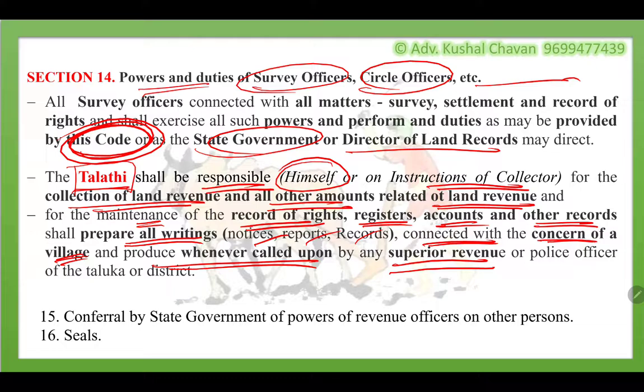Section 15 deals with the conferral by the state government of powers of revenue officers on other persons — whatever functions, powers and duties are under this code, the state government can also give them to any other person. Section 16 deals with seals — all stamps or papers used by officers, with their signatures in Marathi, and all such seals — their authorization is given under Section 16.